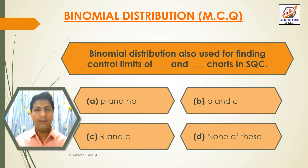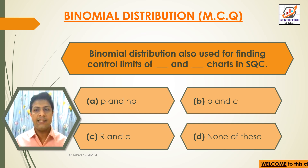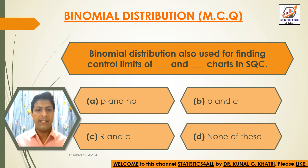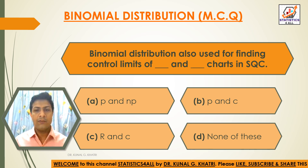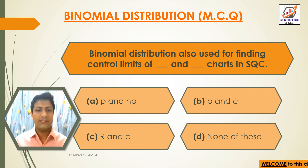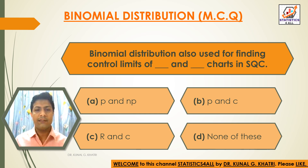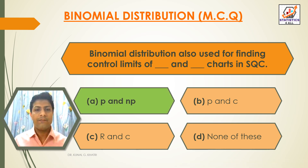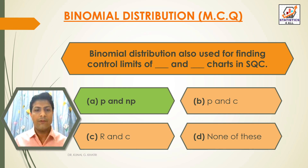Next question: Binomial distribution is also used for finding control limits of dash and dash charts in SQC — that is Statistical Quality Control. Option A: P and NP charts. Option B: P and C charts. Option C: R and C charts. Option D: None of these. The answer is option A — P and NP charts.